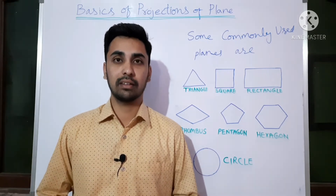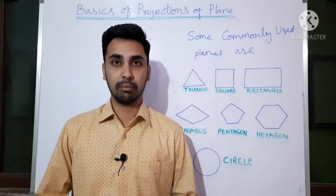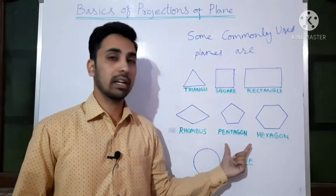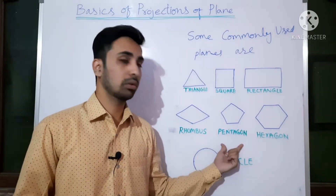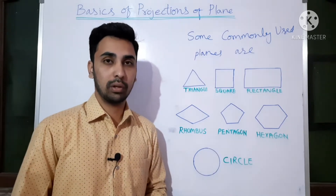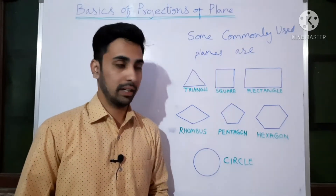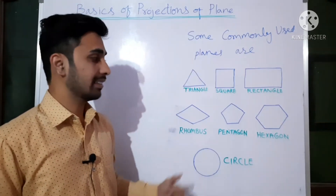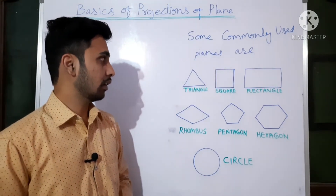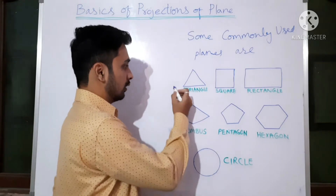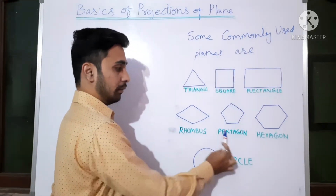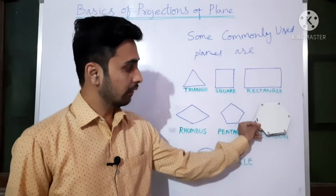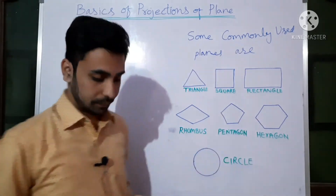In this video we will be discussing the basics related to projection of planes — how they will ask the questions, everything one by one. Let us see the commonly used planes. With respect to the examination point of view, the planes we will be using are: triangle, square, rectangle, rhombus, pentagon, hexagon, and circle.